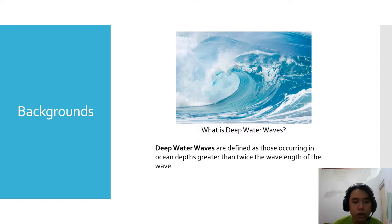For example, if the wavelength of a particular wave is 10 meters, then the wave is considered a deep water wave if the depth of the ocean is greater than five meters, where the wave is occurring.